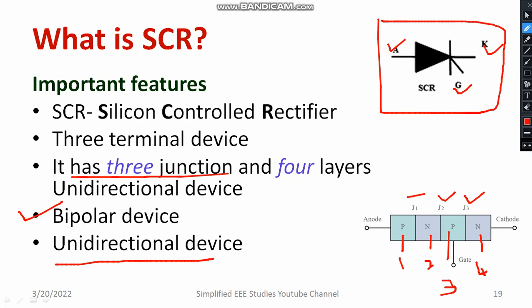Now I would like to show you the doping levels of the different layers. SCR is a semi-controlled device, or you can call it a half-controlled device. Why? Because SCR can only control the on-state by using the triggering pulse. The off-state is not under control — there is no control over turn-off. That is why it is called half-controlled or semi-controlled. Make a note: it is a half-controlled or semi-controlled device.